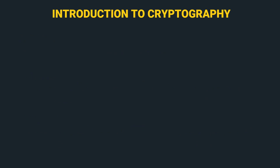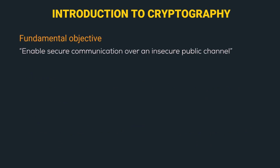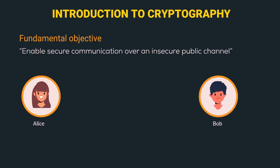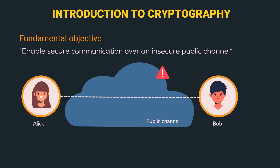Now let's understand the fundamental objective of cryptography. The fundamental objective is to enable secure communication over an insecure public channel. Consider two people, Alice and Bob, who want to communicate with each other. However, the channel they are using is an insecure public channel.